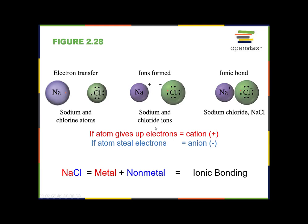If an atom gives up electrons and becomes positive, it's called a cation. If an atom steals or takes electrons and becomes negative, it's called an anion. The other thing to notice about an ionic bond is that it's formed between a metal and a nonmetal. In this case, the metal is sodium and the nonmetal is chlorine. We can tell where the metals and nonmetals are on the periodic table by finding the bold zigzag line — the nonmetals are on the right side of that line and the metals are on the left. Ionic bonds are always formed between a metal and a nonmetal. The metal always becomes the cation, and the nonmetal always becomes the anion.